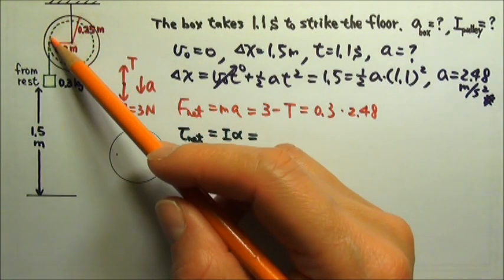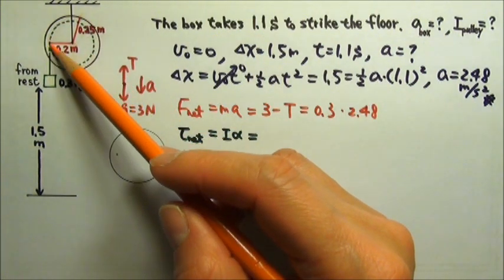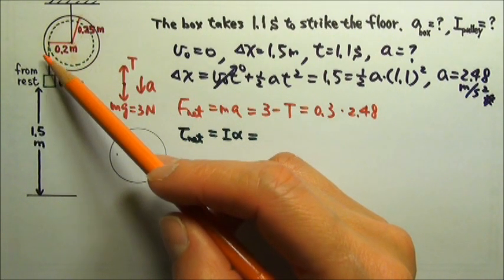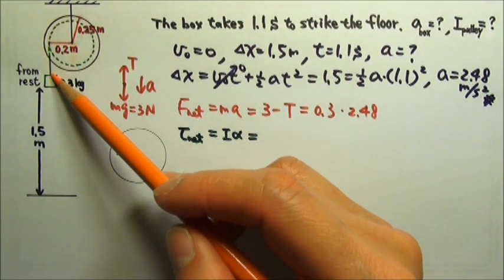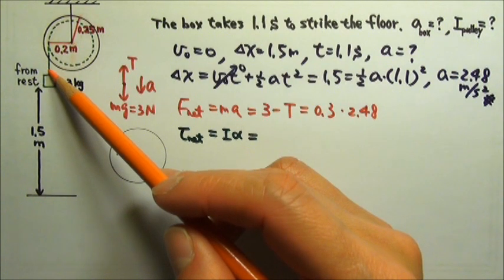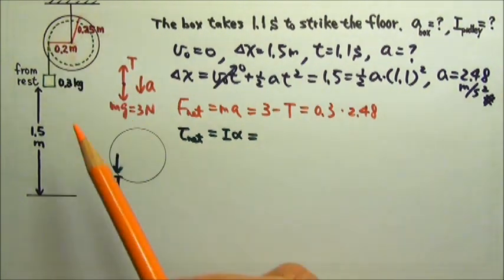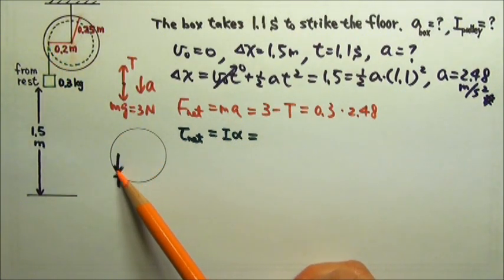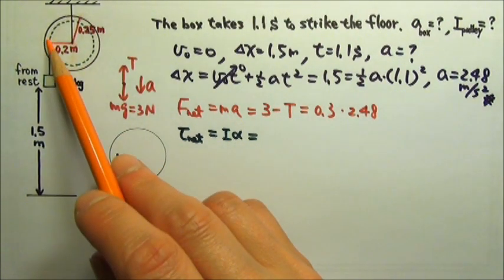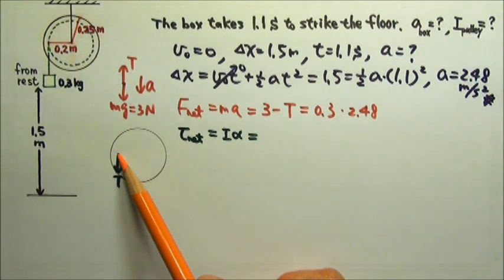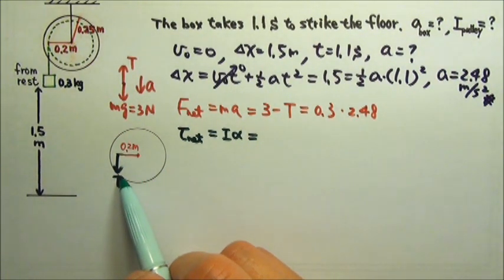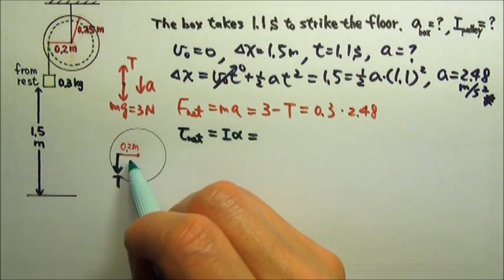Of course, the pulley is also touching the string, and the tension in the string does produce a torque. If I draw the contact force tension on the pulley, I have to draw it from the contact point right over here. Now I'm just going to draw the tension on the pulley in this diagram. That's the tension acting right there, 0.2 meters from the axle.